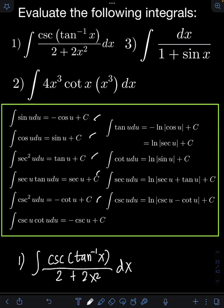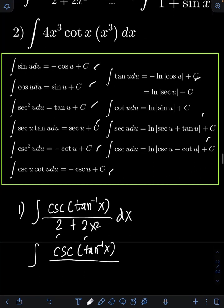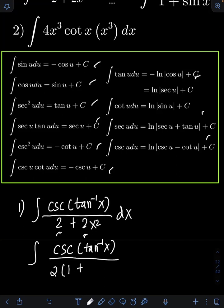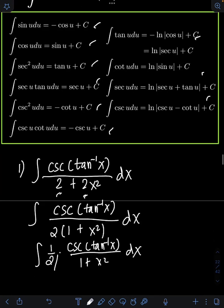Here are the formulas we can use to evaluate integrals of trigonometric functions — we need to memorize them. For this problem, what I will do first is factor the 2 in the denominator. So I will have cosecant of arctangent of x over, factoring out 2, giving 2 times quantity 1 plus x squared dx. This over 2 in the denominator can be written as one-half times cosecant of arctangent of x over 1 plus x squared dx. So I can put one-half in front of the integral.